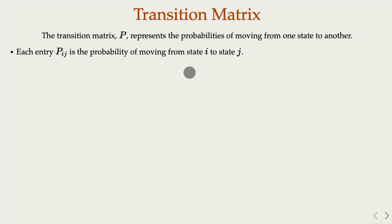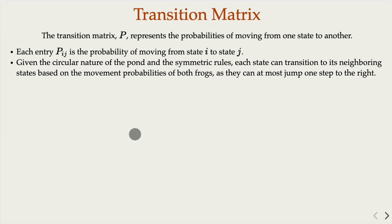In general, in Markov chain, once you have different states, the pij would represent the probability moving from i to j. Each state can transition to its neighboring states based on the movement probability of both frogs. So they can at most jump one step to the right. Which means even though we have n squared states, at each given position, there is only limited number of positions you can jump to.